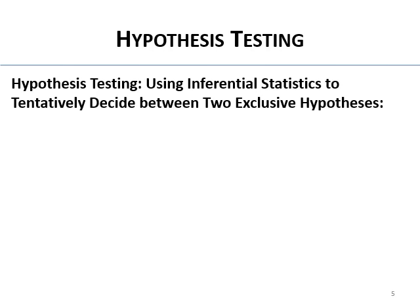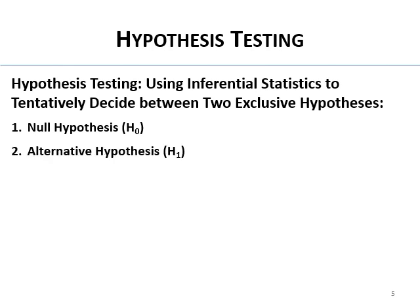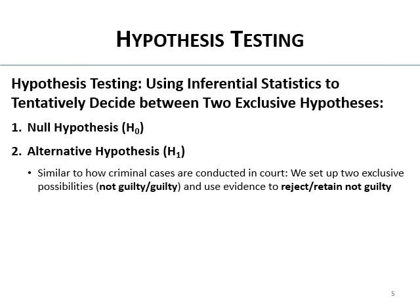Hypothesis testing uses inferential statistics — tests that let you tentatively decide between two exclusive hypotheses. You've already done this with correlation: the null hypothesis and the alternative hypothesis. The way we do hypothesis testing is similar to how criminal cases are conducted in our courts. We set up two exclusive outcomes — guilty or not guilty — and we either reject or retain the null.